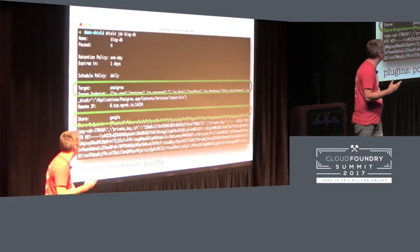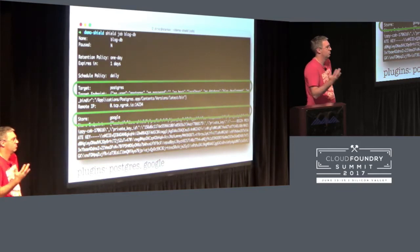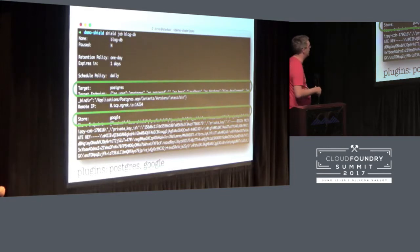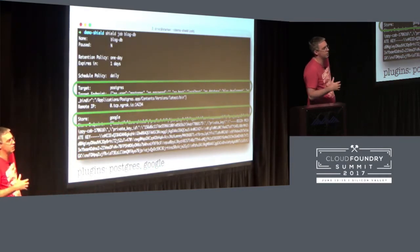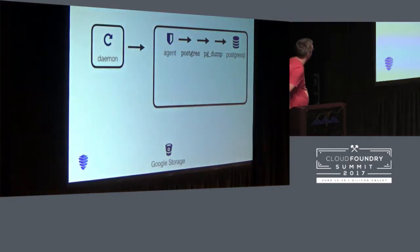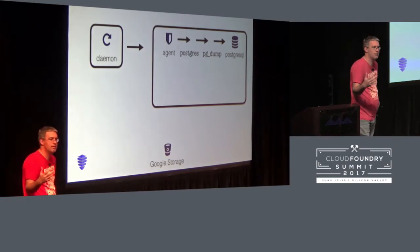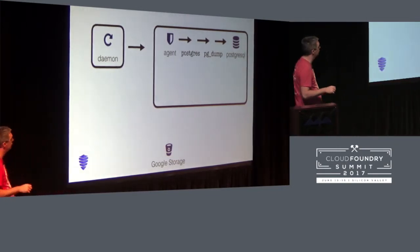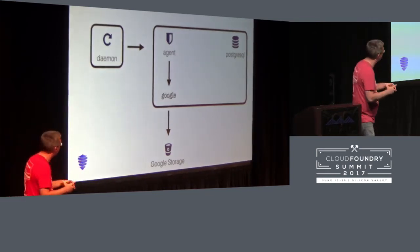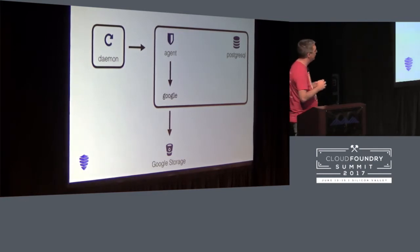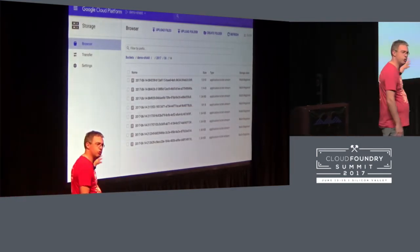The Postgres plugin is a good example. Shield doesn't actually know how to talk to Postgres — it just calls out to a small CLI app. The Postgres plugin knows how to call PG dump and PG restore. The Google plugin knows how to talk to the Google API. Shield knows nothing. When a request comes through, the agent calls out to the local Postgres plugin, which calls PG dump, bzips the result, and ships it off to Google.